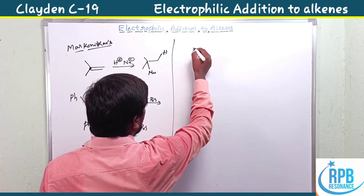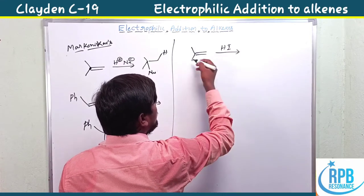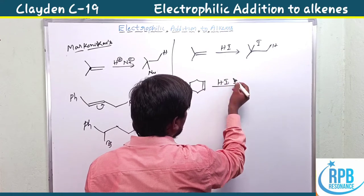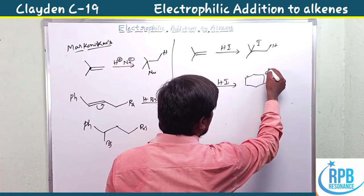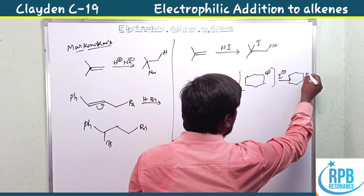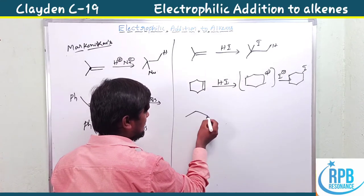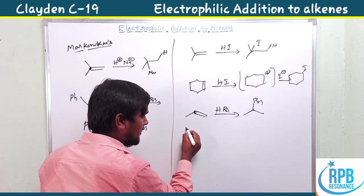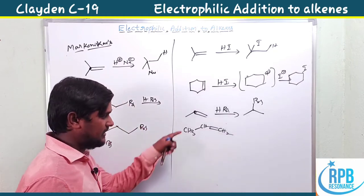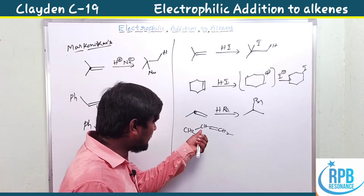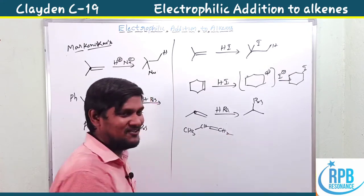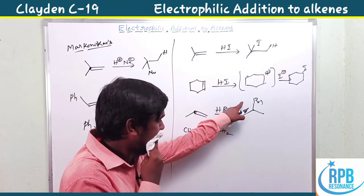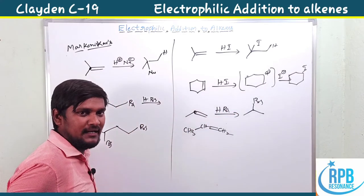More examples: for a compound with HI, iodine is the negative part and hydrogen is positive. For propene (CH₃–CH=CH₂) with HBr: carbon 1 has one hydrogen and carbon 2 has two hydrogens. The negative part Br⁻ attacks the carbon with fewer hydrogens — carbon 1 — giving the Markovnikov product.